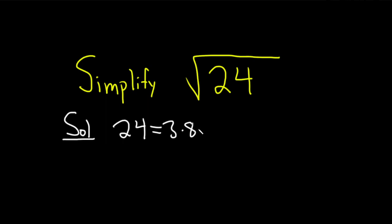So 24 is equal to 3 times 8. That's pretty easy to do. And 3 is a prime number and then we can write 8 as 2 cubed. So this is 3 times 2 cubed. That's a good way to start the problem.